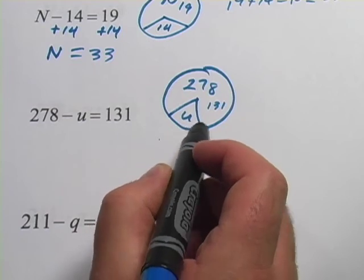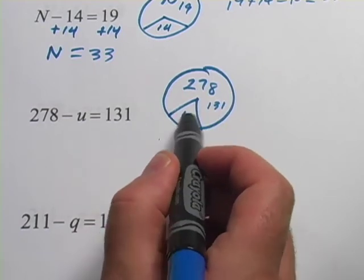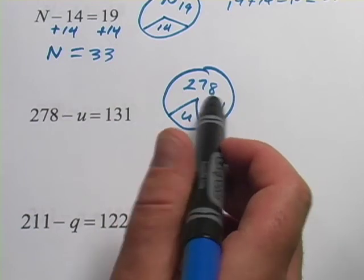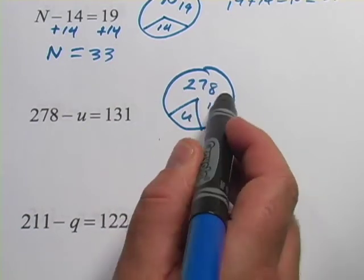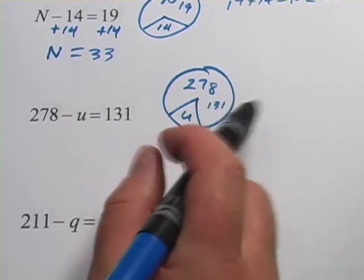So what you want to do with this one is realize that if u and 131 add up to 278, you can find u by saying, 278, let's take away the 131 part. If we take away 131, we'll just have u left.